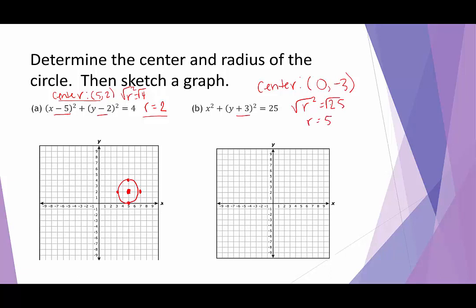To graph this one, the center is 0, negative 3 — we go down 3 on the y-axis. Then we plot the four points using the radius of 5: counting 1, 2, 3, 4, 5 in each direction — up, right, down, and left — and do our best to connect them into a nice circle.